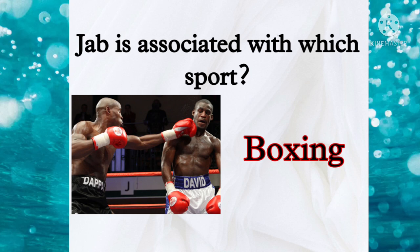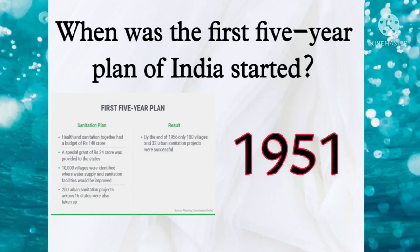Now moving to the next question: when was the first Five-Year Plan of India started? The right answer is 1951. And if you are asked who introduced the first Five-Year Plan, the right answer is Joseph Stalin.